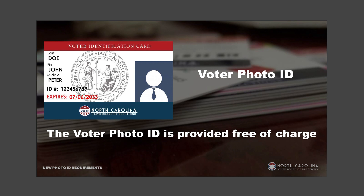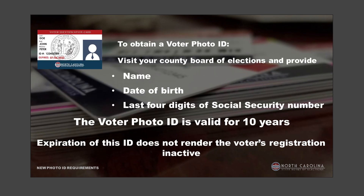When you come into the Board of Elections office, you can get a voter photo ID for free, and replacements are also free. The requirements are simply the same as the voting process: your name, date of birth, and the last four digits of your social security number. Those are the only three things asked. Then you can get your voter photo ID, which is good for 10 years. The photo ID does not connect to your voter registration — when it expires, it doesn't mean your registration expires.